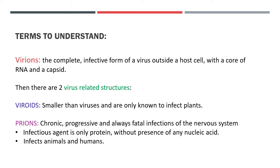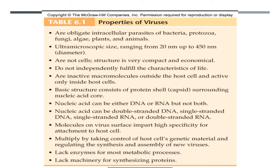Prions cause progressive and always fatal infections of the nervous system. They are known to infect both animals and humans, and their infectious agent is only protein — with no nucleic acid present. This is the key difference between a virion and a prion: virions contain nucleic acid, while prions do not.